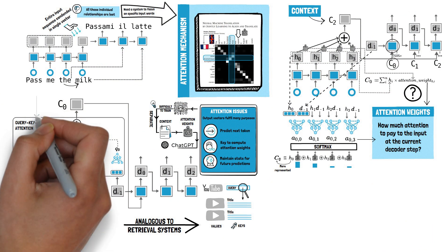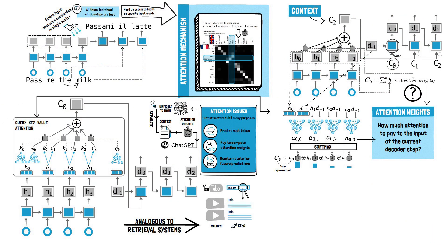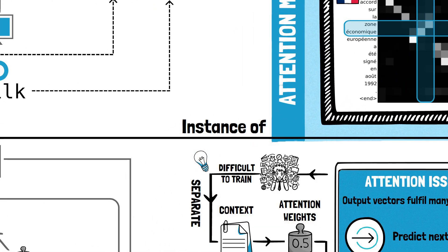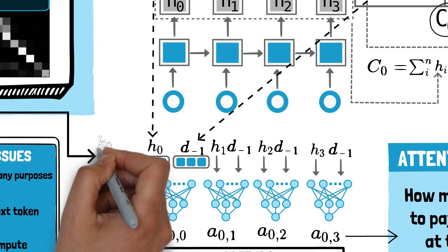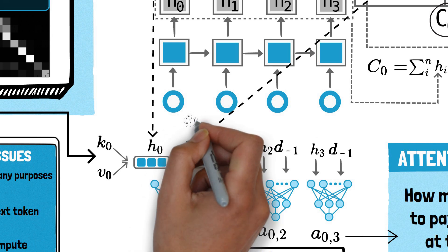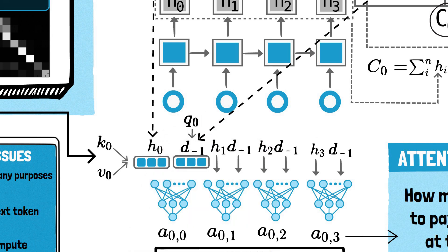In reality, the earlier version of the attention model that we saw is a simpler instance of this more general model, where the key and value are identical, both equating to the hidden state of the encoder. The query is similarly just the preceding state of the decoder.